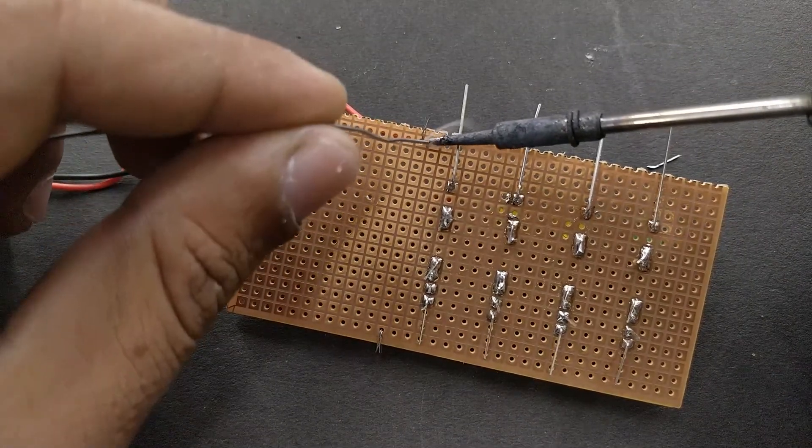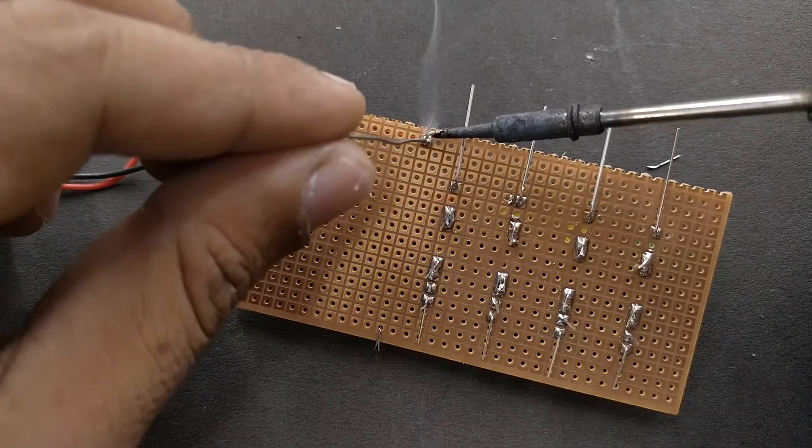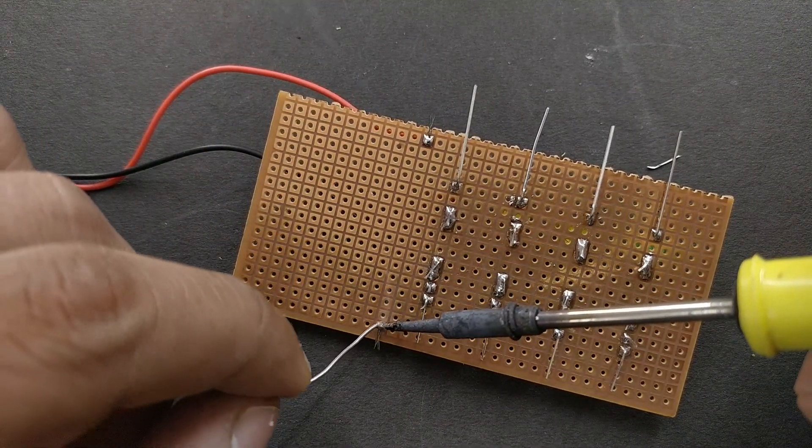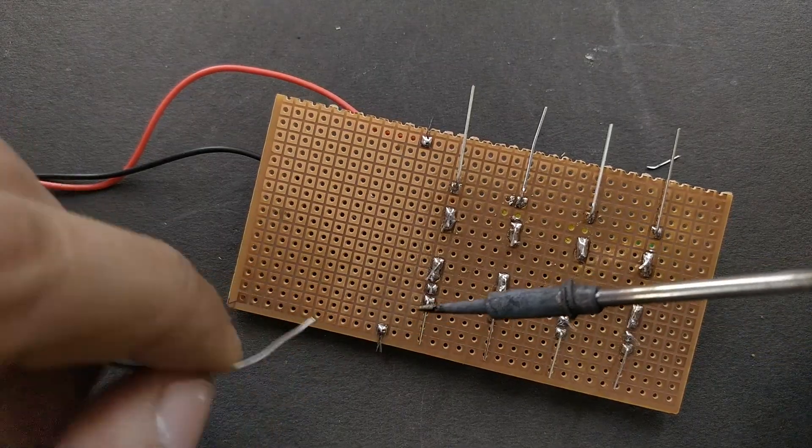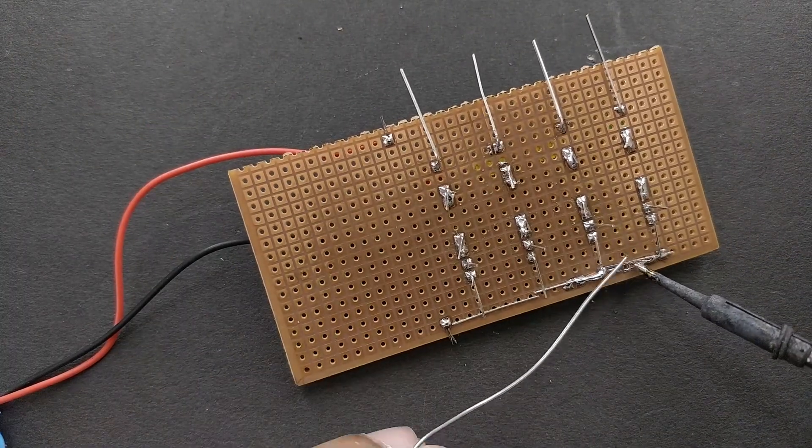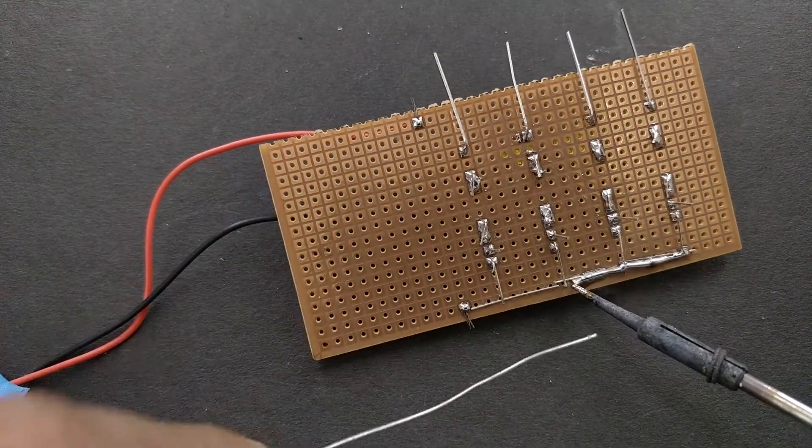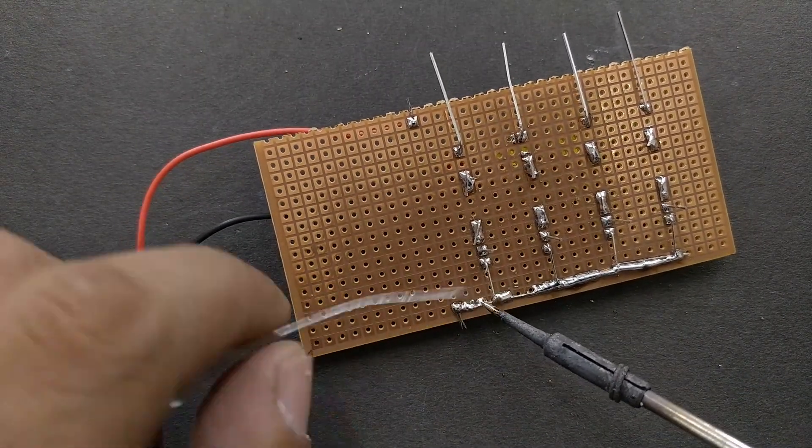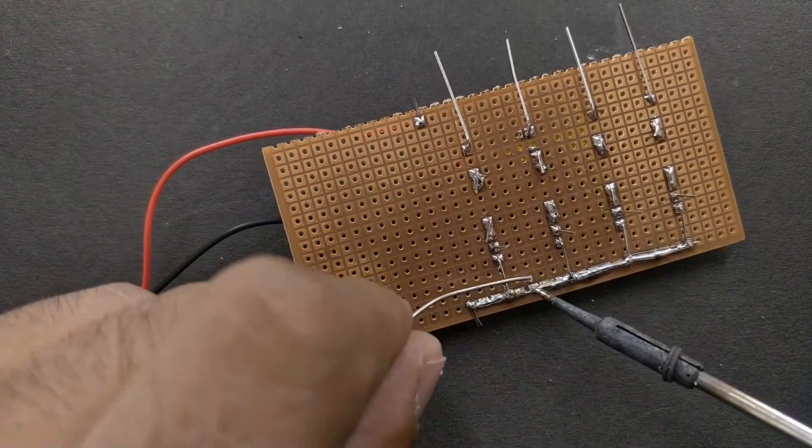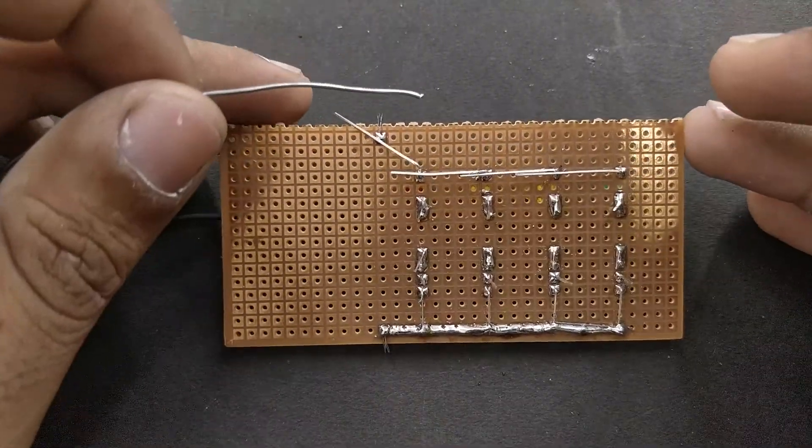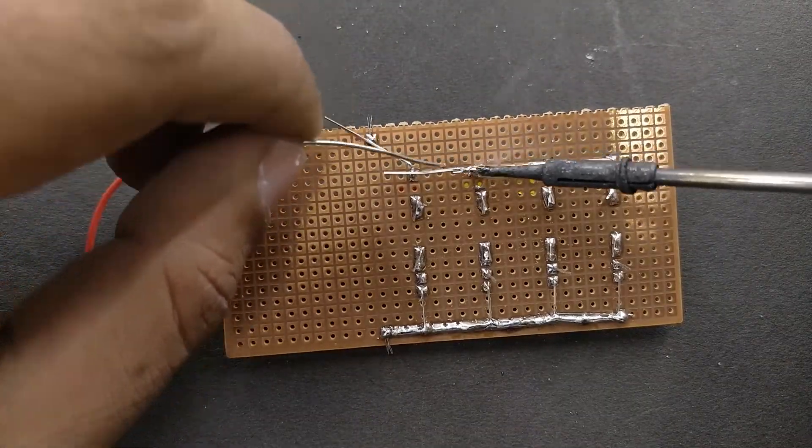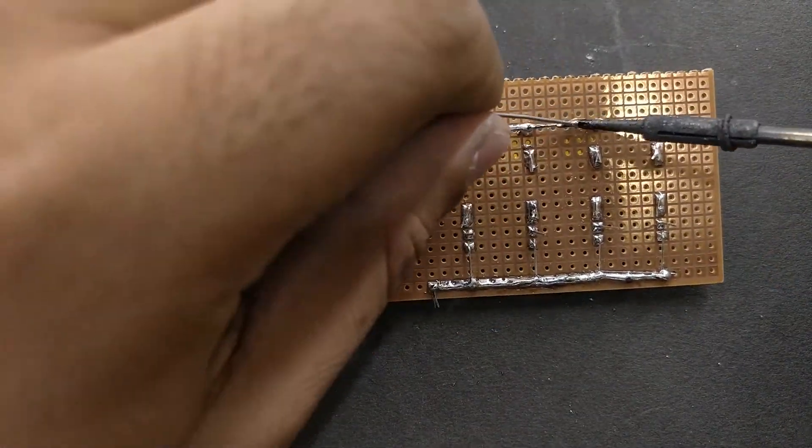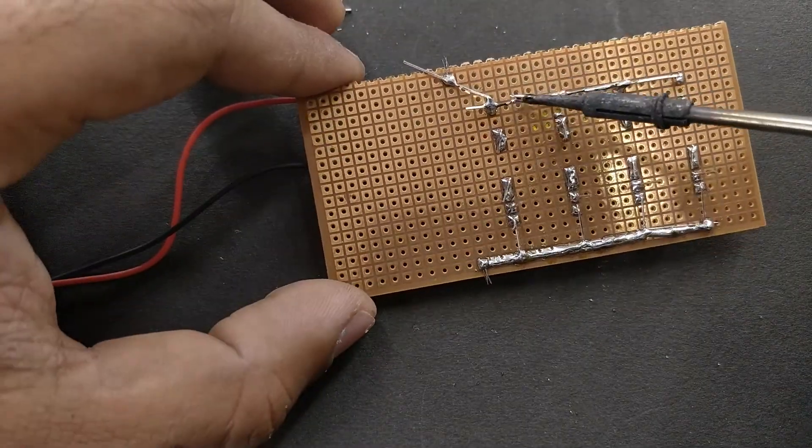Now fix a 9V battery adapter on the board and connect the emitter pins of the transistor to the negative terminal of the battery. Then connect the positive terminals from the LED to the positive terminal of the battery.